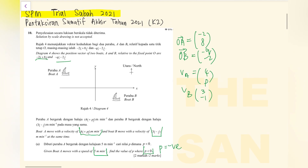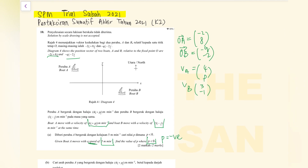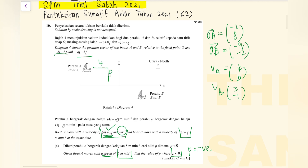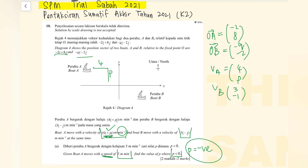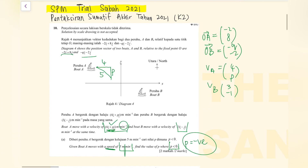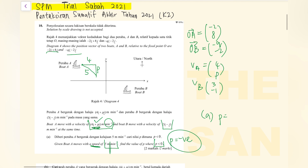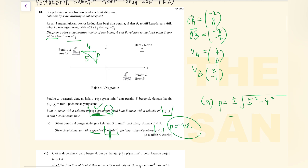Since P is less than 0, P is a negative value. Looking at the velocity, in one minute board A moves 4 units to the right and P units downwards — we know P is downwards because it's negative. The speed is 5, so using the Pythagorean theorem: P equals plus or minus square root of (5² − 4²). Since it must be a negative value, the answer is P = −3.